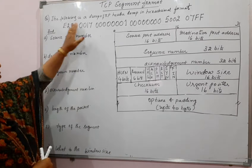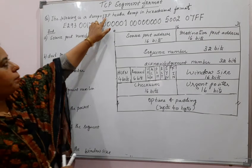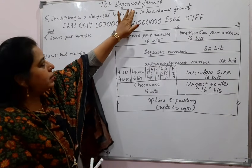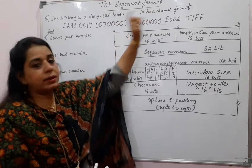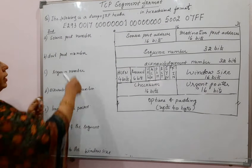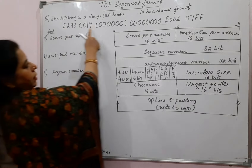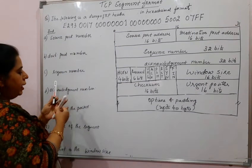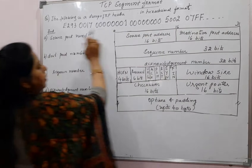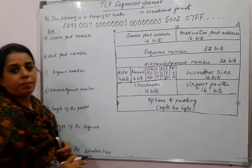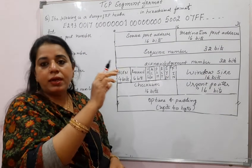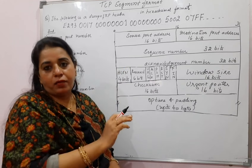The question says that following is a dump of a TCP header in hexadecimal format. They have given here some numbers — these are the values in the TCP header format.